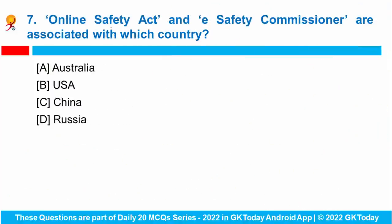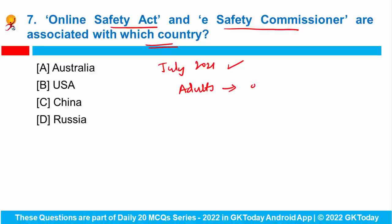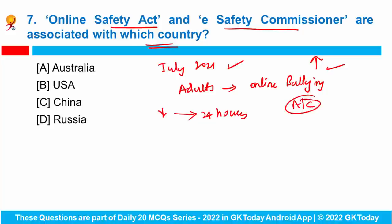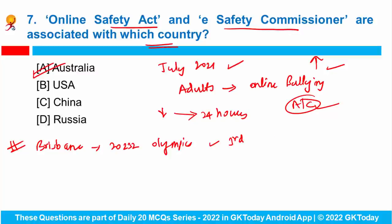Question number seven: Australia's Online Safety Act, passed in July 2021, has recently come into effect. It allows adults to report cases of online bullying to the E-Safety Commissioner. The act empowers the E-Safety Commissioner to order social media websites to take down bullying-related content within 24 hours and impose fines if not followed. This act addresses bullying against both adults and children. Also, Brisbane from Australia will host the 2032 Olympics — it is the third Australian city to host the games, after Sydney in 2000 and Melbourne in 1956.